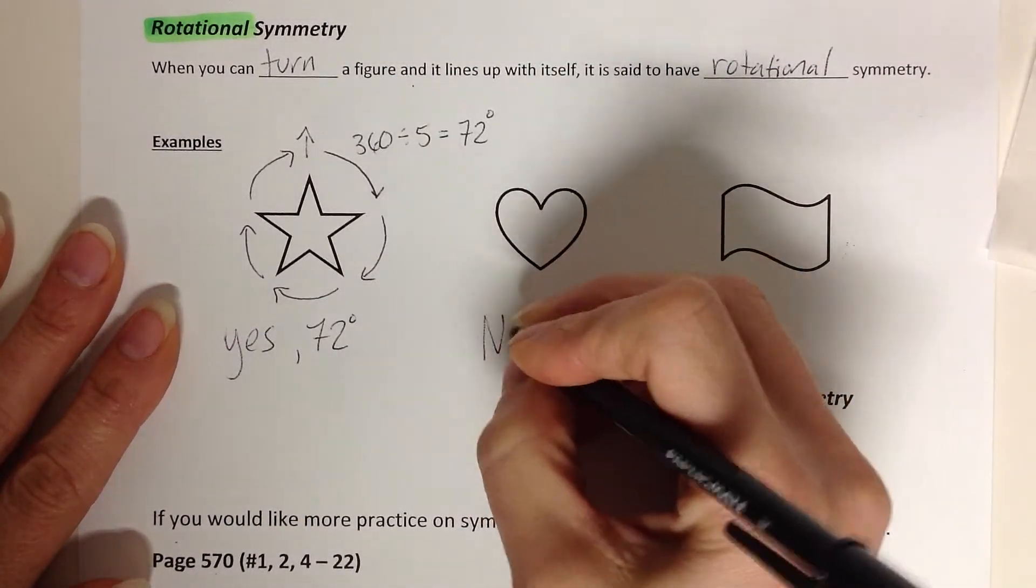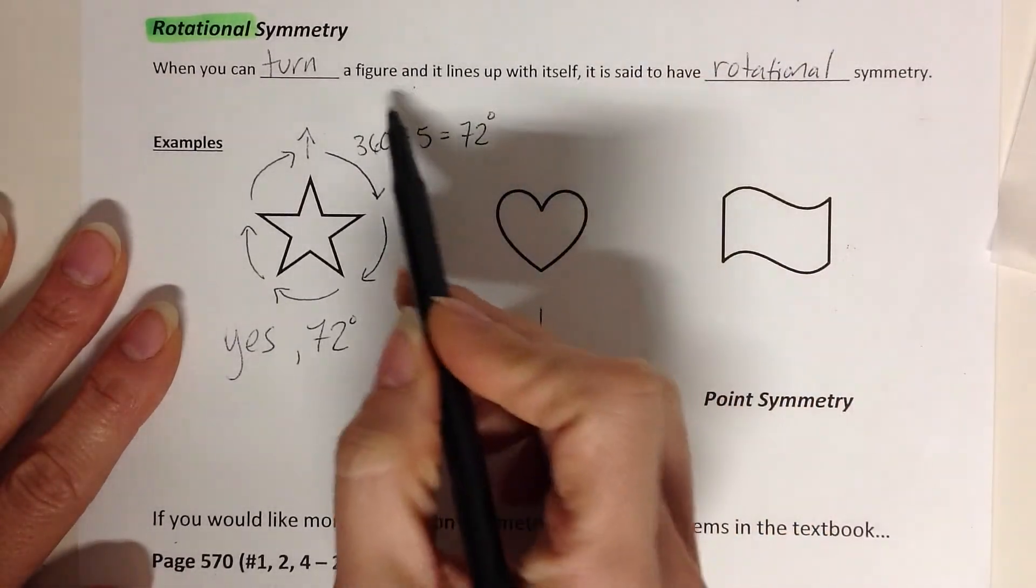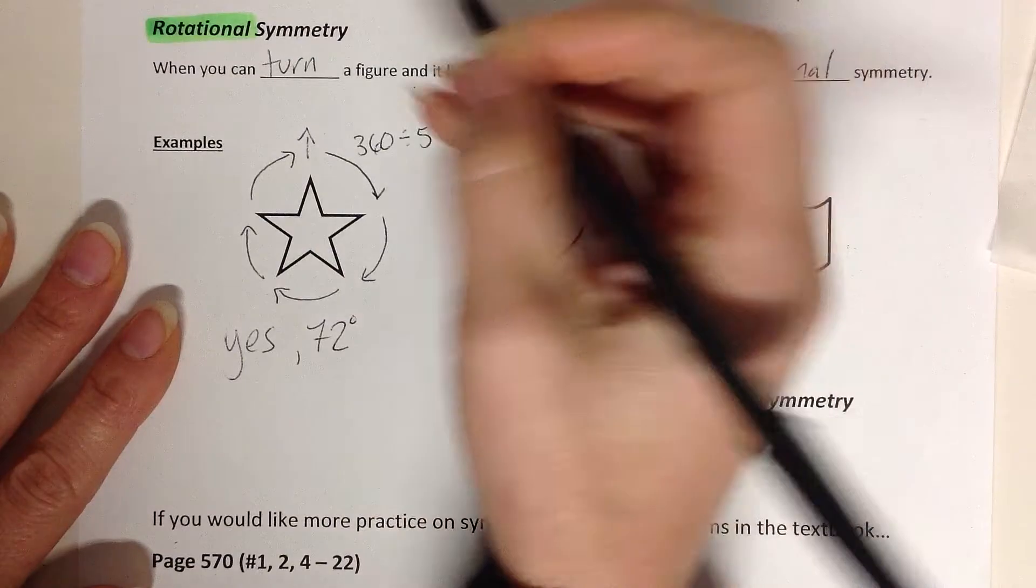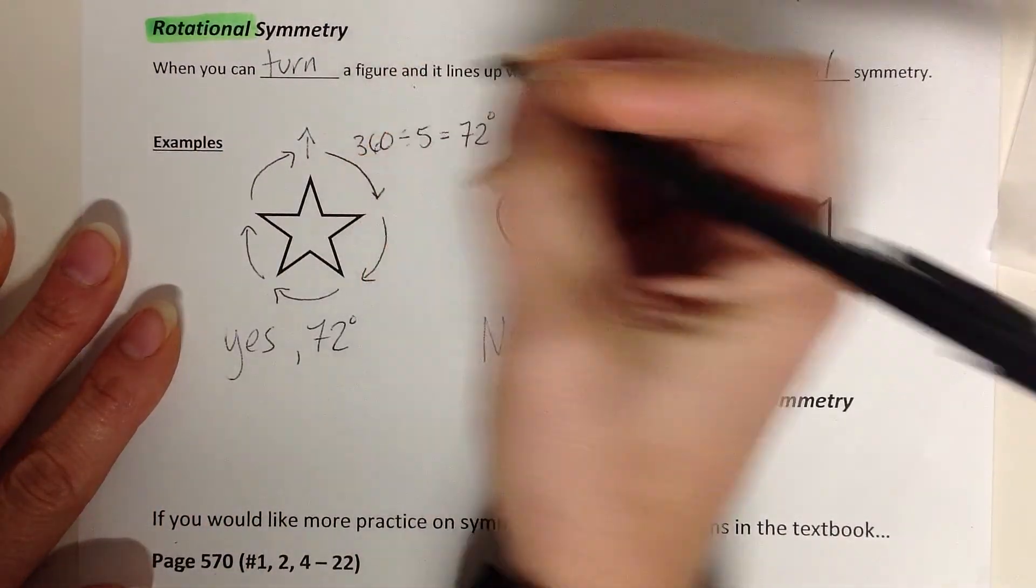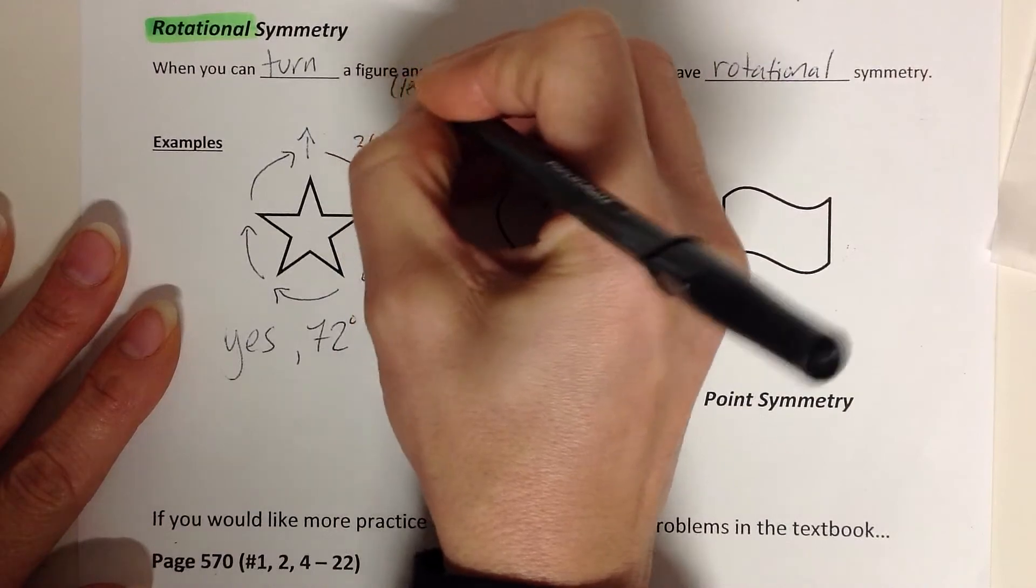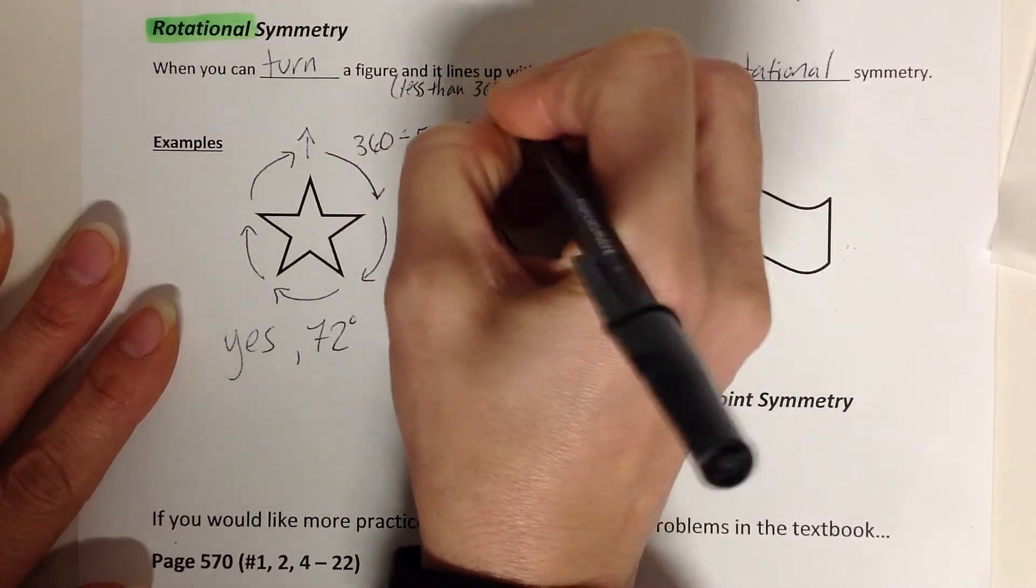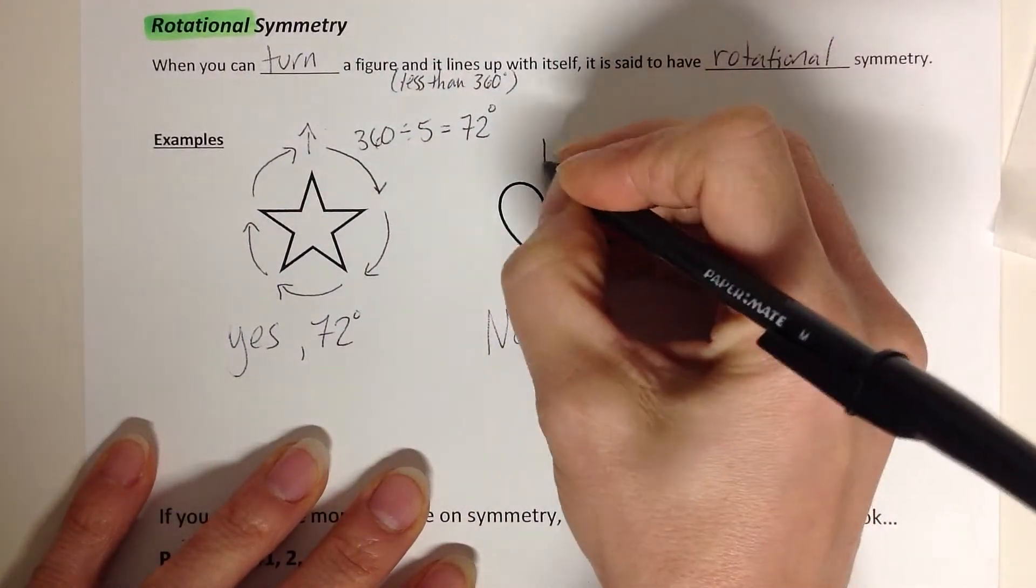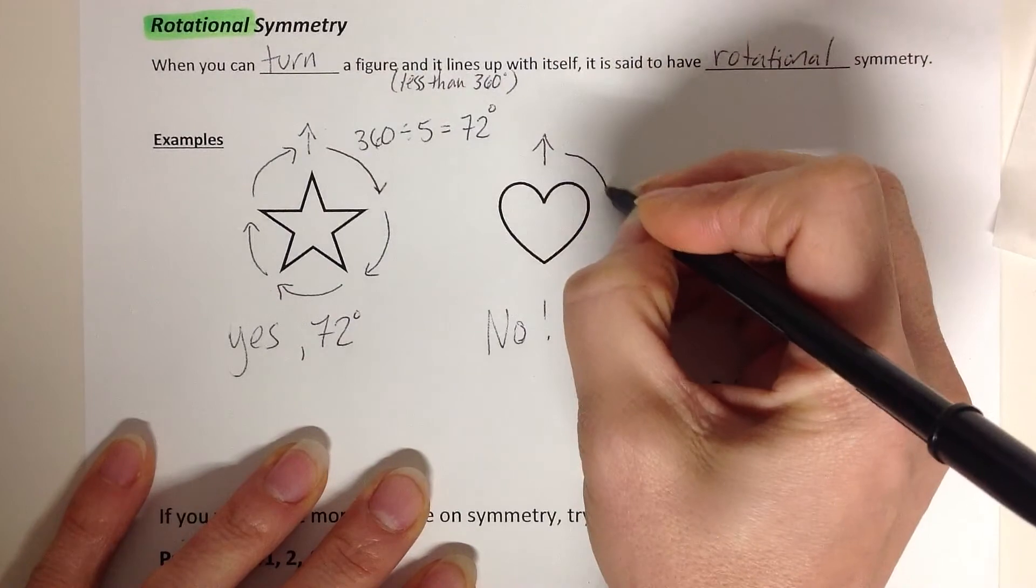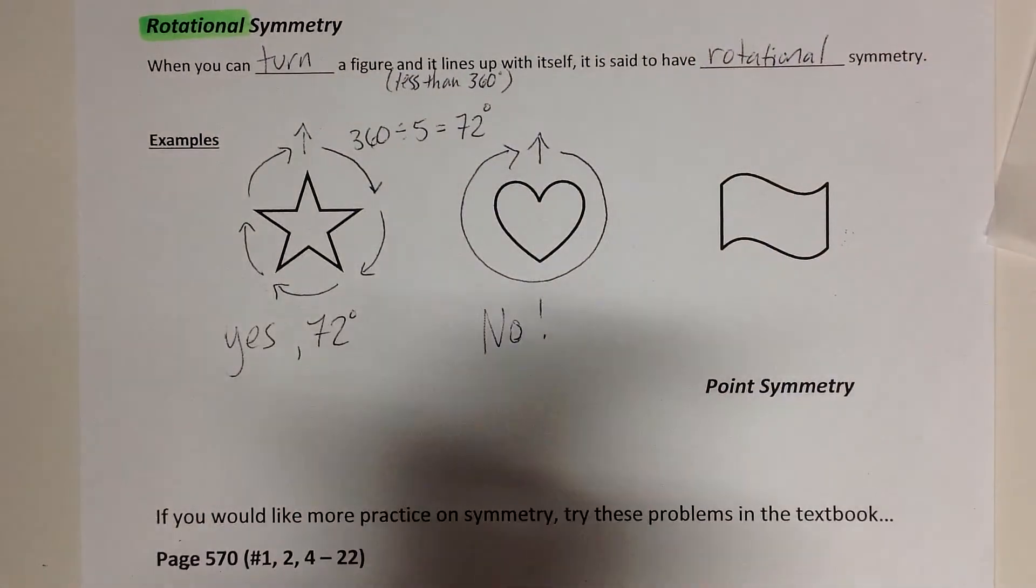It has to land on itself. And this is the part of the definition that I don't really like, because everything, when it goes 360 degrees - when you can turn a figure less than 360 degrees and it lines up with itself, then it has rotational symmetry. This, I had to go when I started with the arrow up, but the only time it landed on itself was when I went all the way back around at 360. So that's a no.